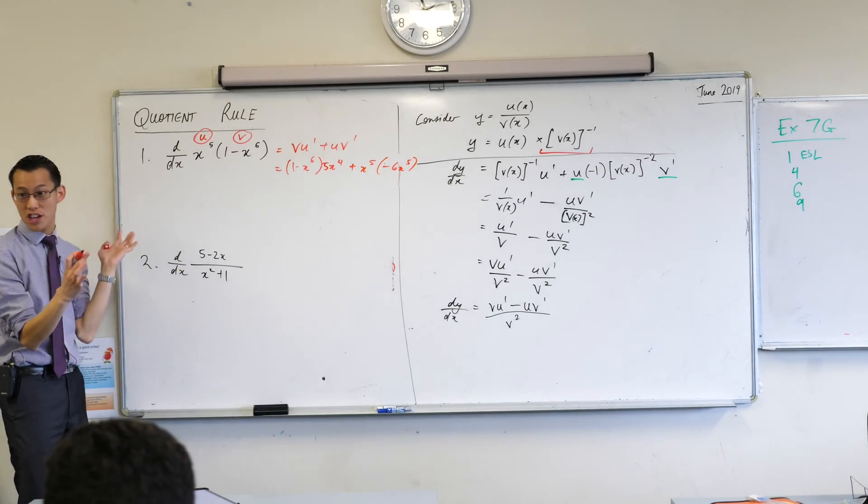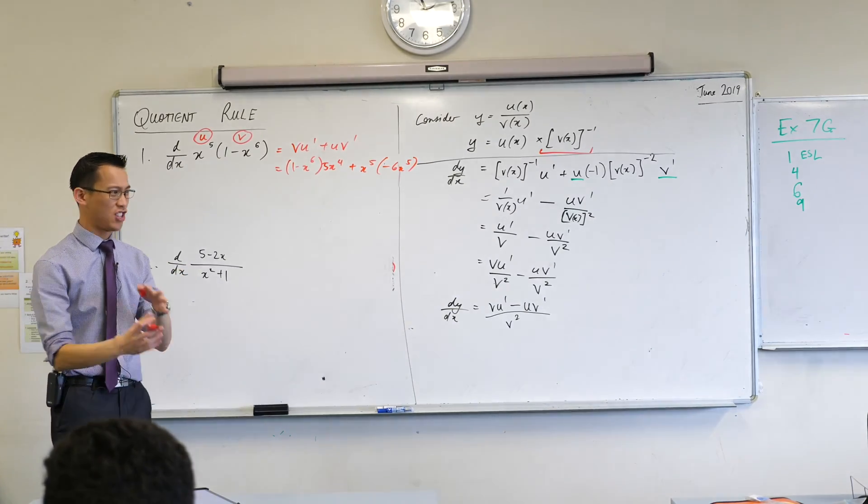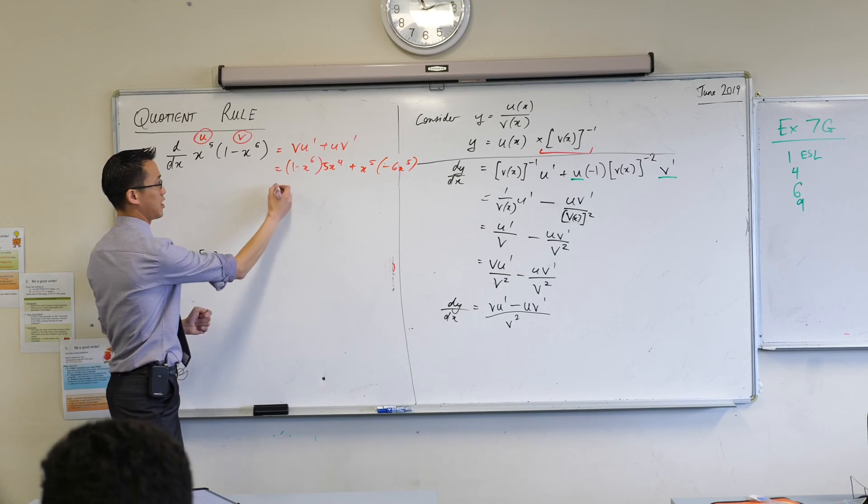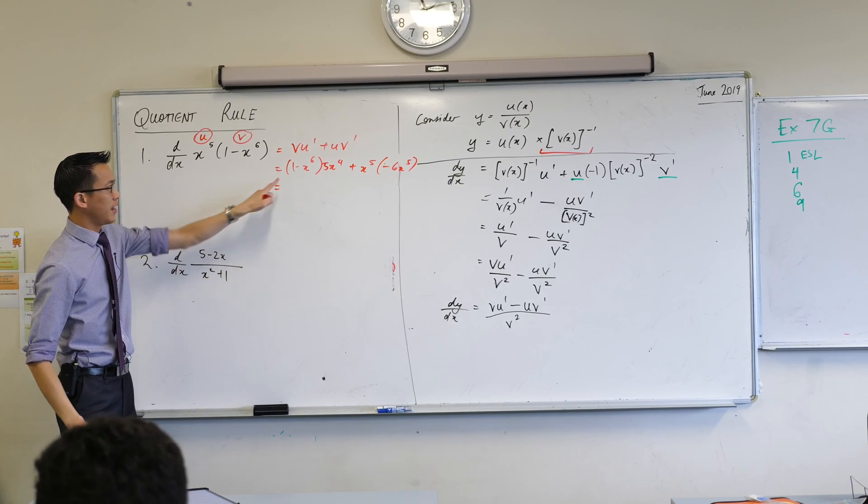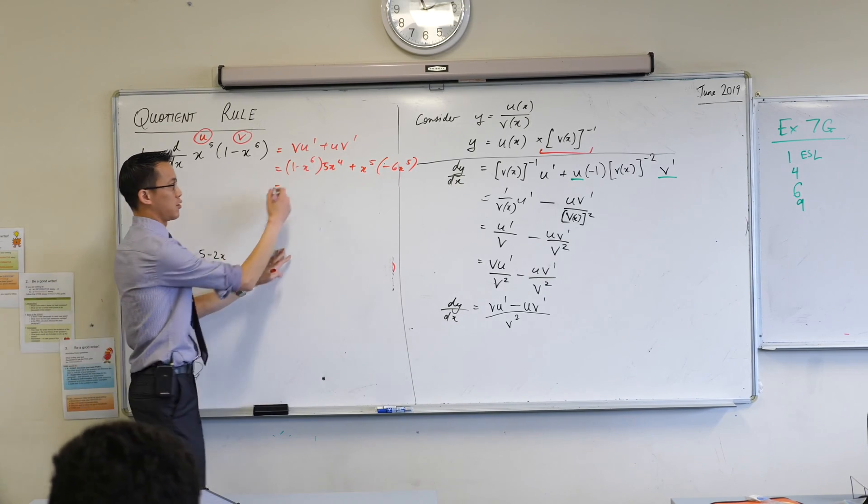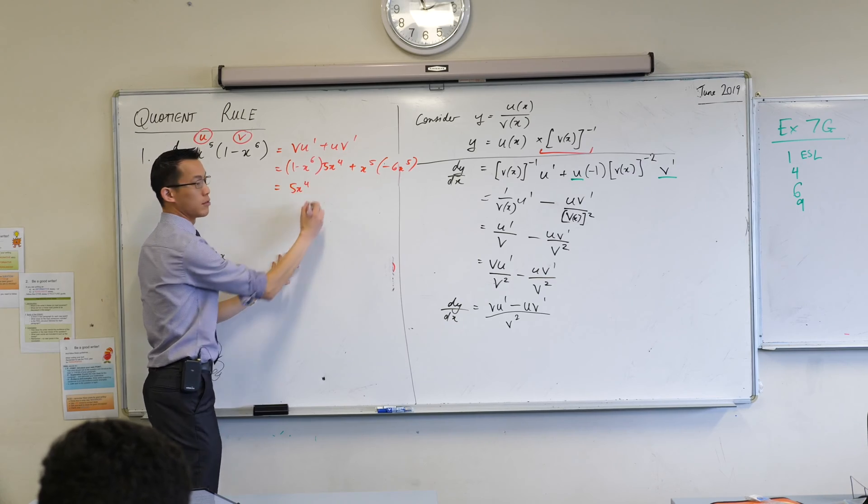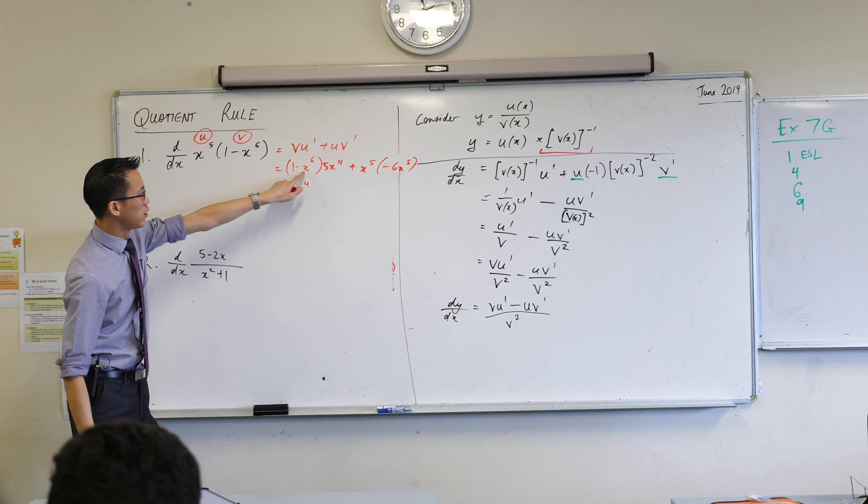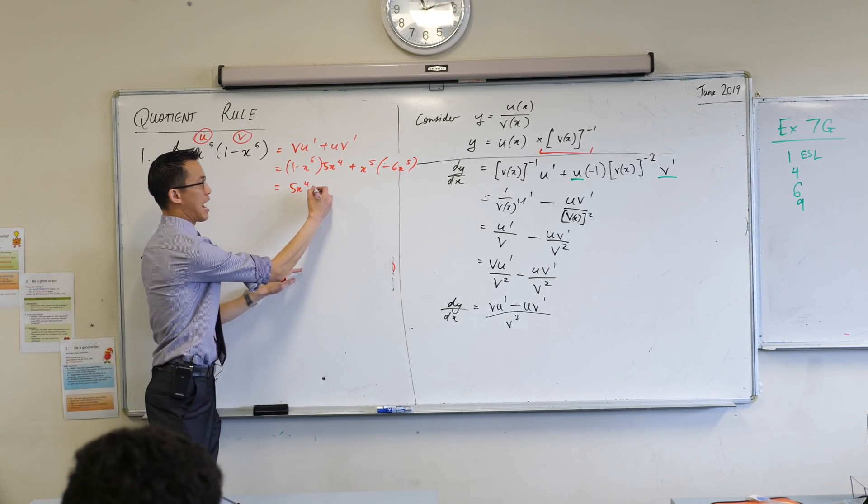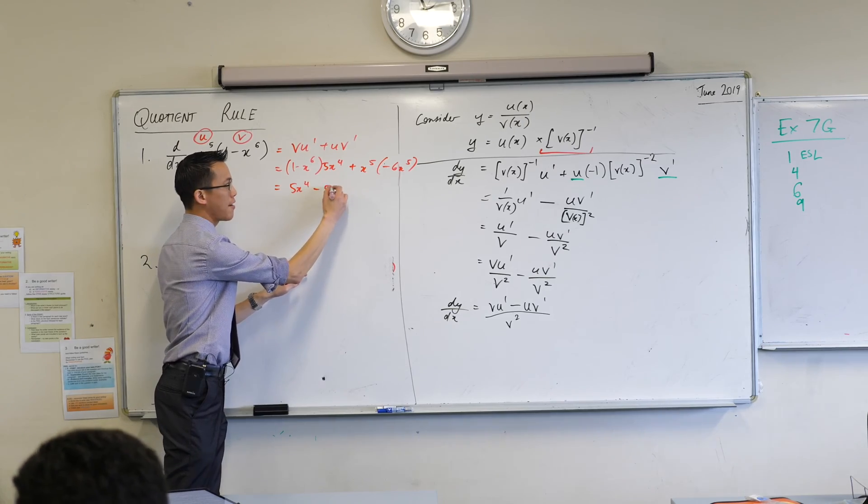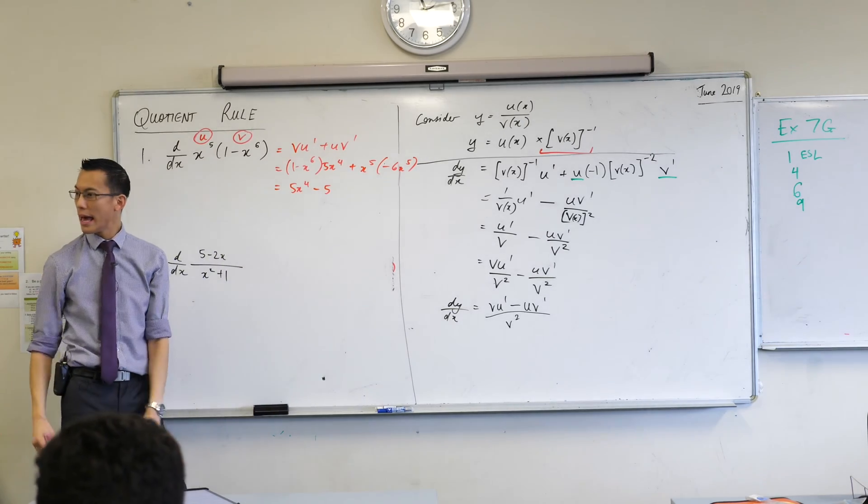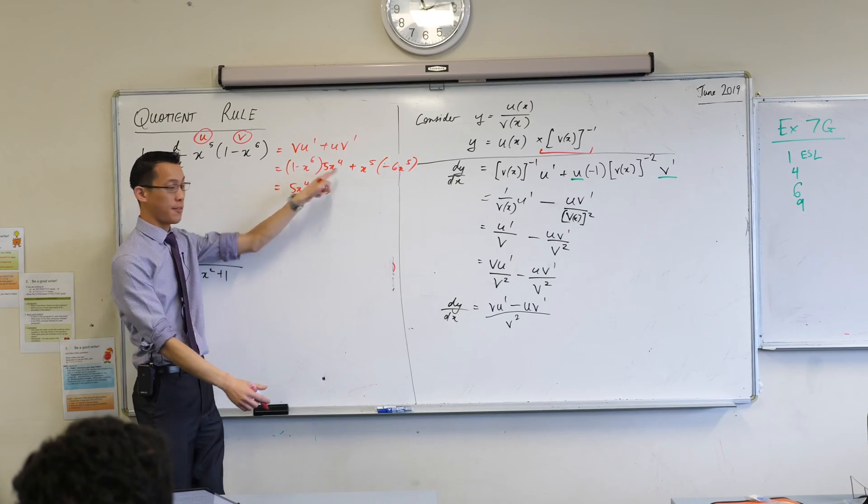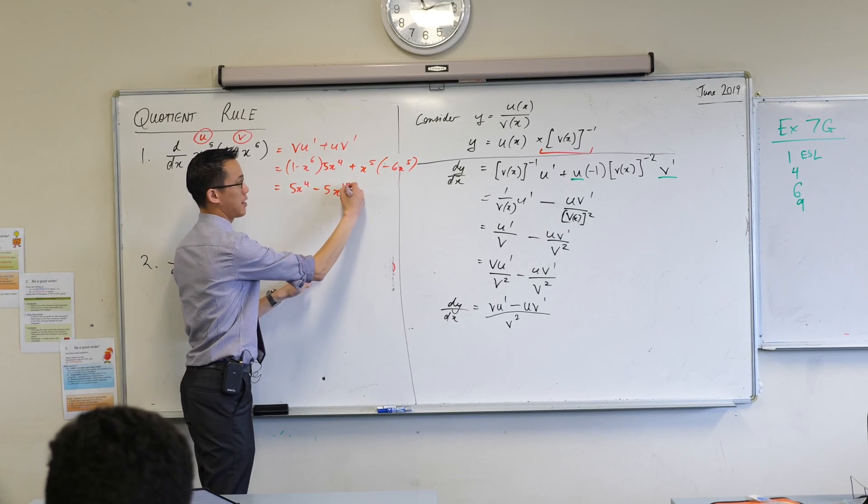So there we go, I've done all the differentiation now, and all that remains is just to tidy this up algebraically. Let's do it. Let's see here, so one lot of that, I'll just write that down as 5x to the 4. Now look at your index laws here, I'm going to have minus 5 what? x to the power of 10, very good. So you've got 6 of them here, 4 of them there, x to the power of 10.